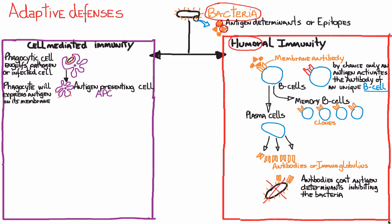Once antigens are expressed on the surface of the phagocytic cell, it becomes an antigen-presenting cell (APC). Several types of cells can become APCs — dendritic cells and macrophages, for example. Any cell that can phagocytose the pathogen and express the antigen on its surface can become an APC. These APCs are specifically presenting antigens to two subgroups of lymphocytes — but this time they are T cells, not B cells.